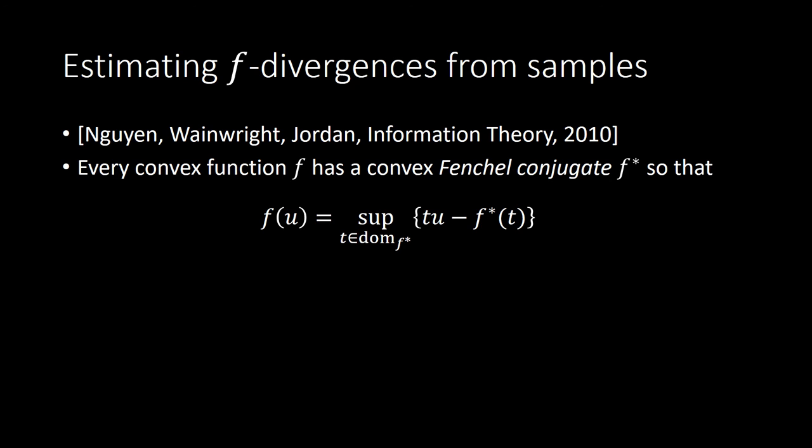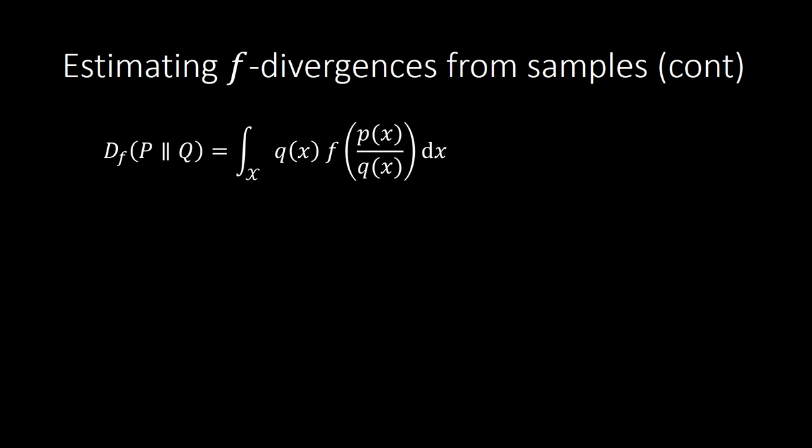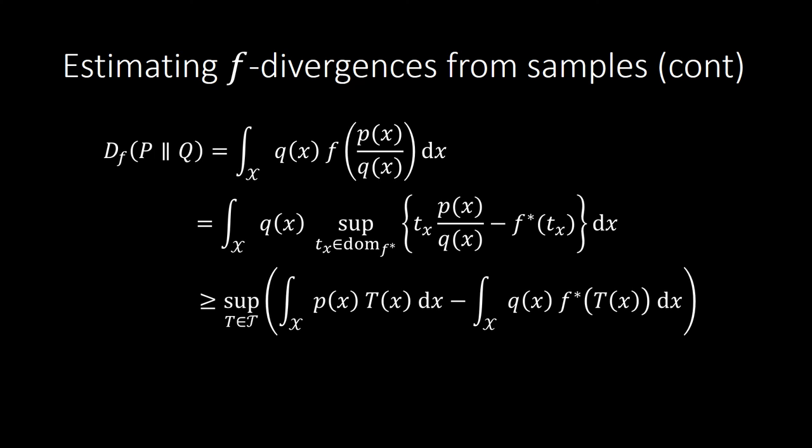To do this, we leverage existing work on estimating f-divergences. This work exploits the representation of convex functions in terms of Fenchel conjugates. Estimating f-divergences from samples is then possible by representing the f-divergence in this Fenchel conjugate representation and deriving a lower bound on the f-divergences that only requires linear expectations.